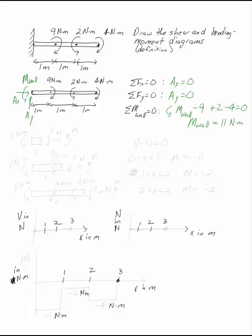Now as I'm going through this beam, there are three places where something changes. So I need to draw three pieces of beam: one that would be before I get to the nine meters, one that would be before I get to the two newton meters, and one that would be before I get to the four newton meters.